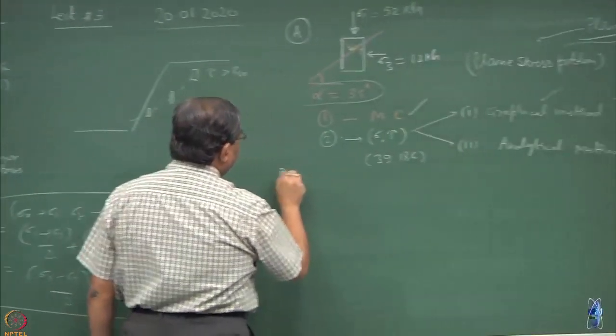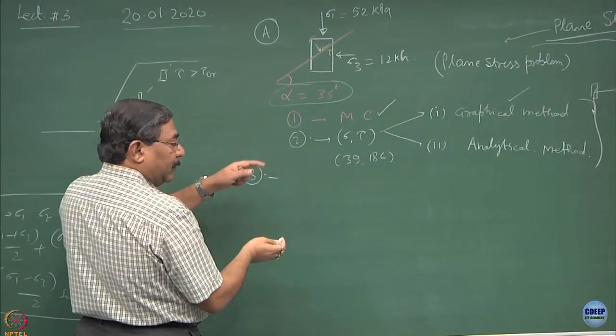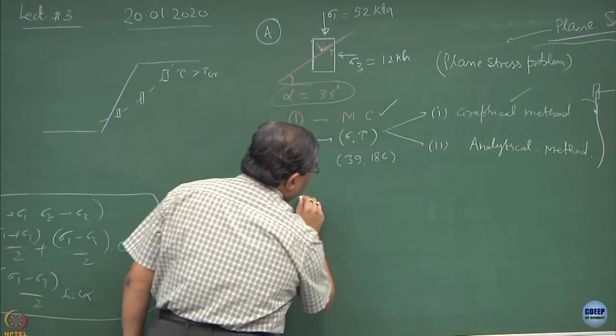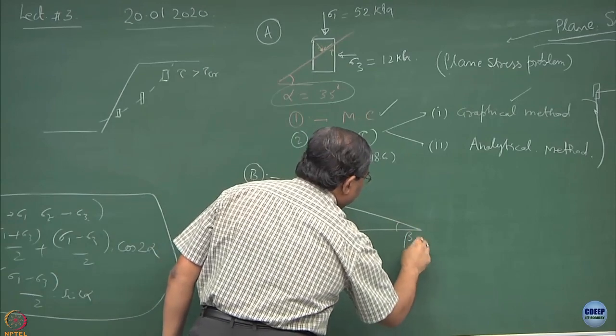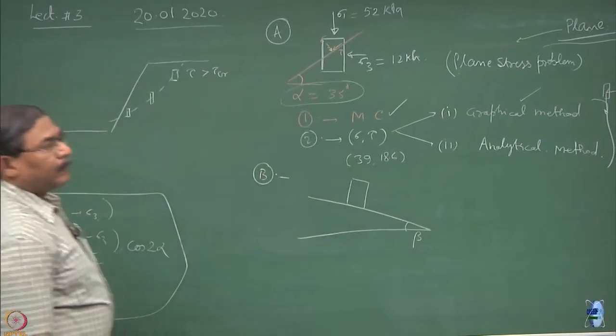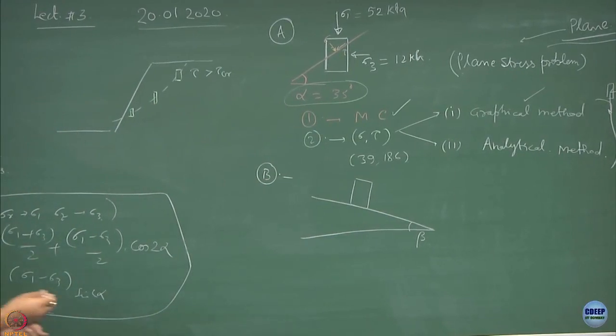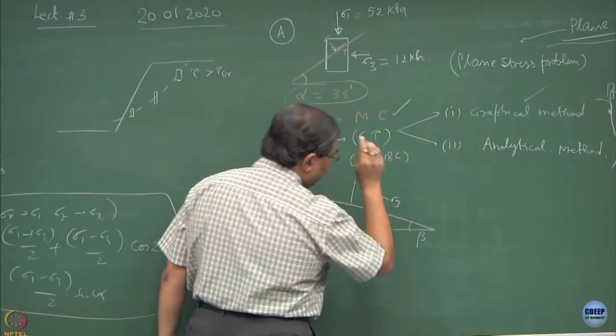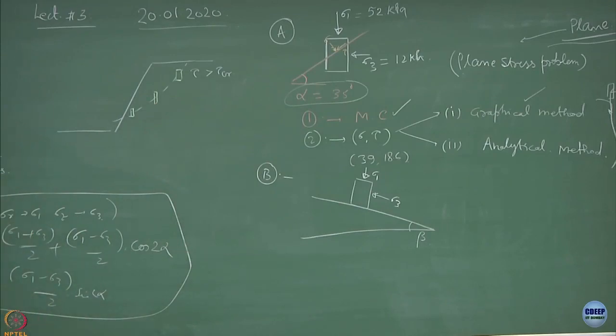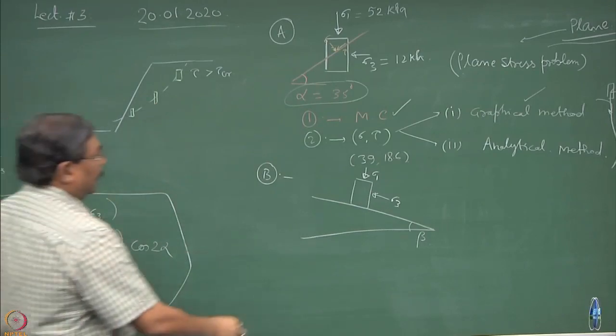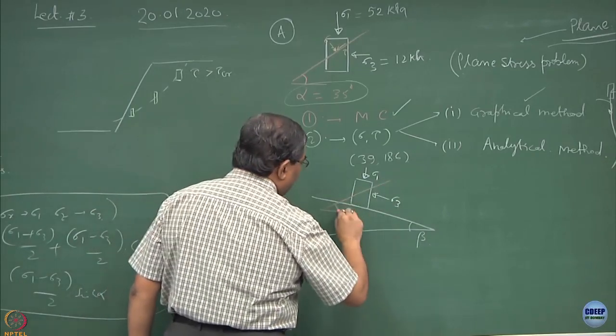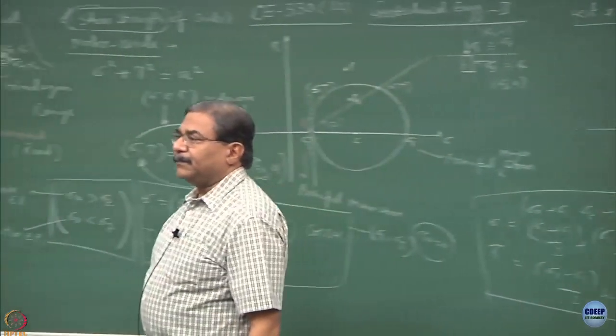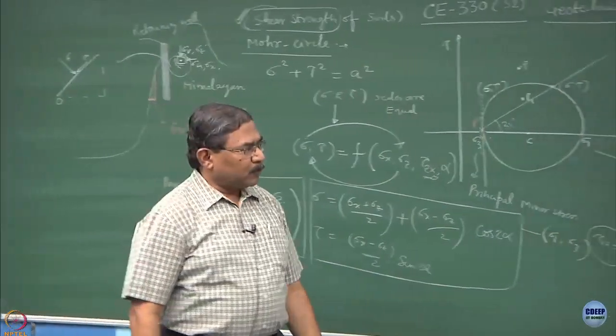So second class of the problem which we normally talk about is - this is the first category of the problems. The second class of the problem would be if there is a complete rotation of the plane. That means this element rather than sitting horizontal, it might be sitting on a plane which is beta. I might be having sigma 1, sigma 3 and again the statement of the problem is find out the state of stress at a plane which is let us say alpha equal to 35 degrees.